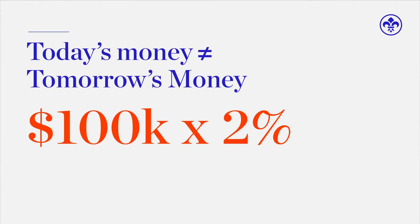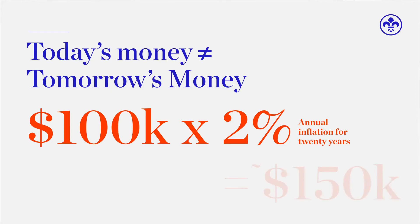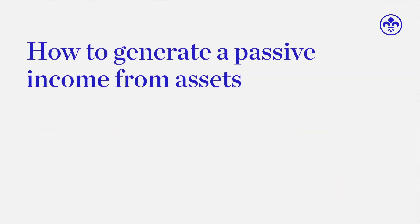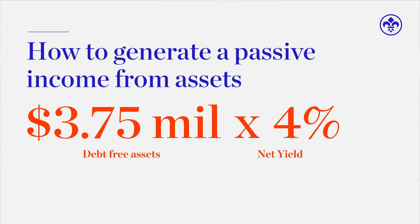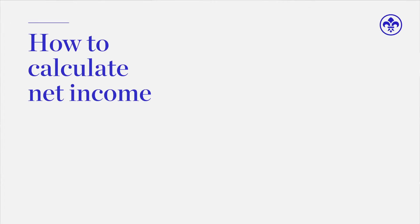So how does this translate into a property portfolio goal? If you want $100,000 of today's money, you need to factor in inflation, because every year that goes on your money doesn't buy as much. A hundred thousand dollars of today's money is actually $150,000 in 20 years time when you factor in inflation. At a net yield of four percent, that means you need $3.75 million dollars worth of property completely freehold. We use a four percent net yield because if you buy a high-yielding property that's paid off, you should generally be able to net four percent after all operating costs.